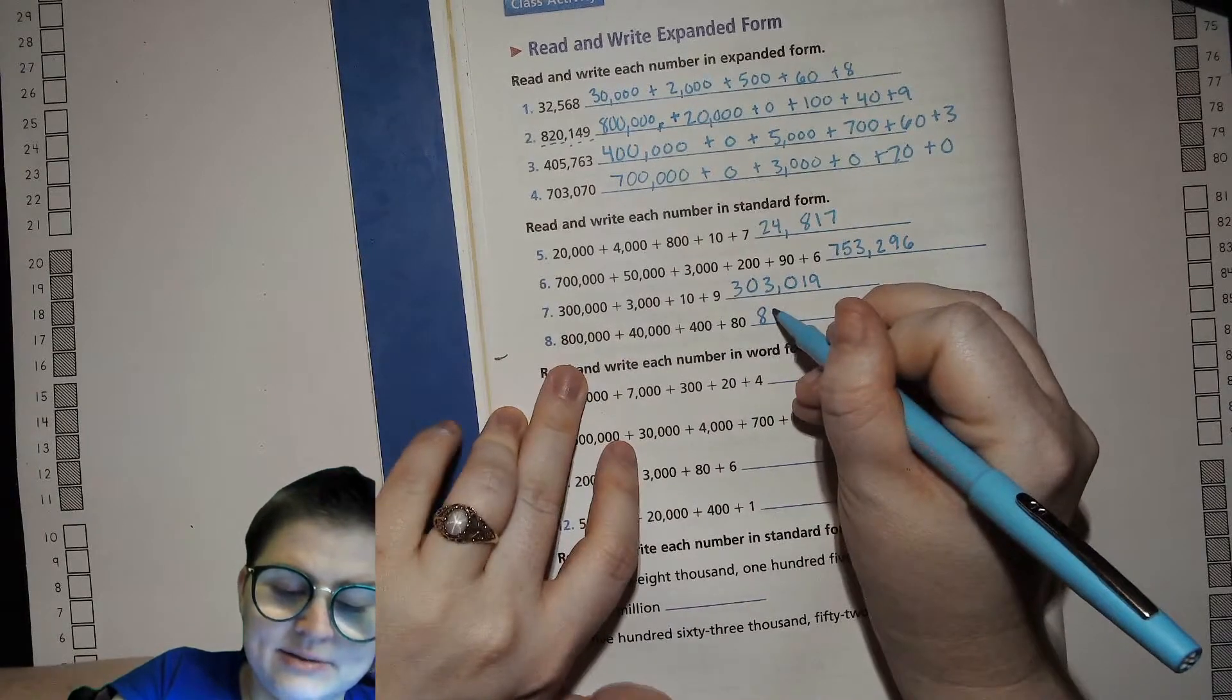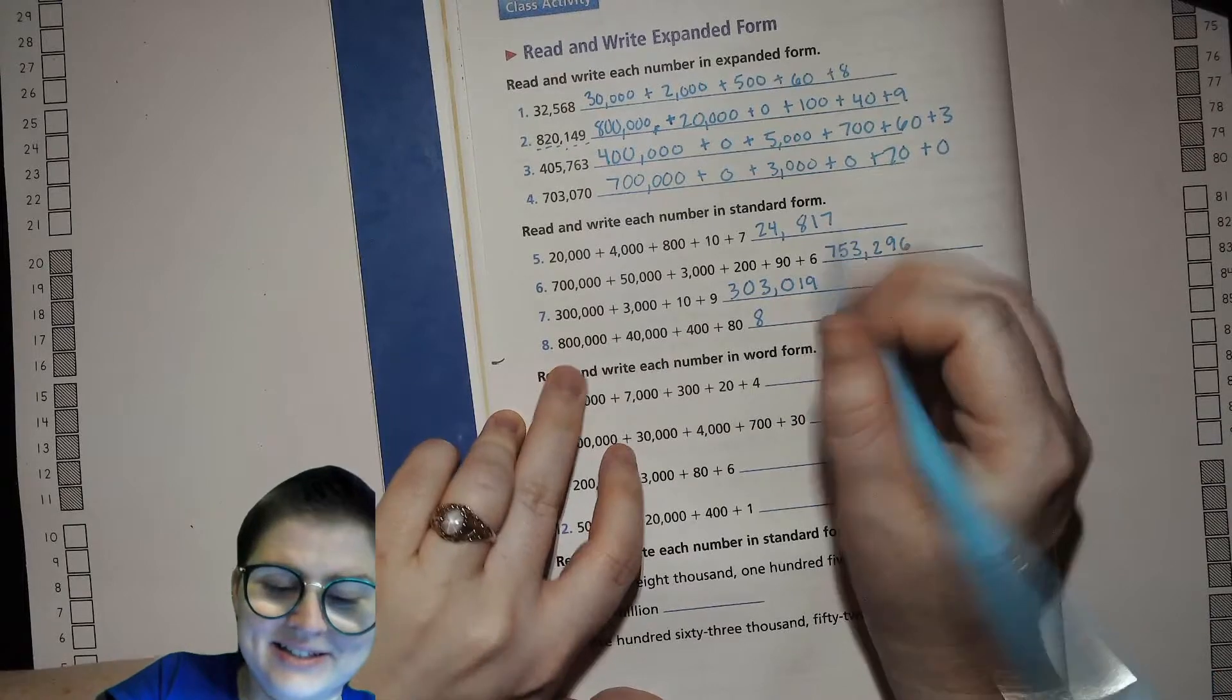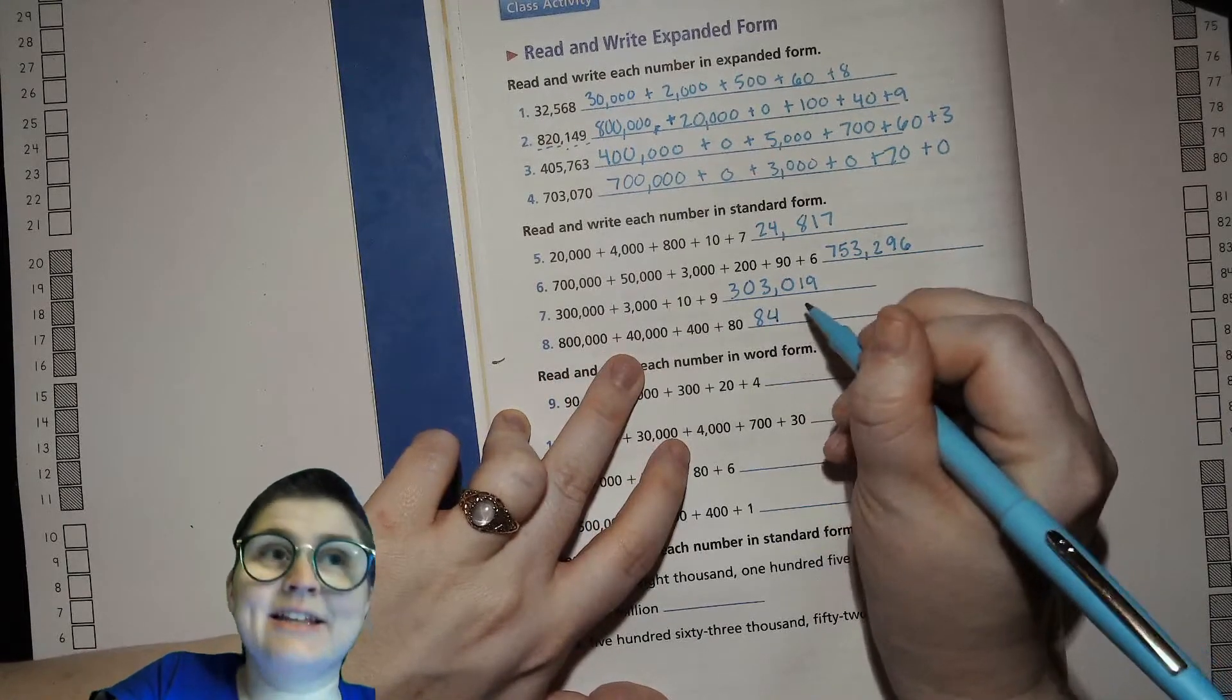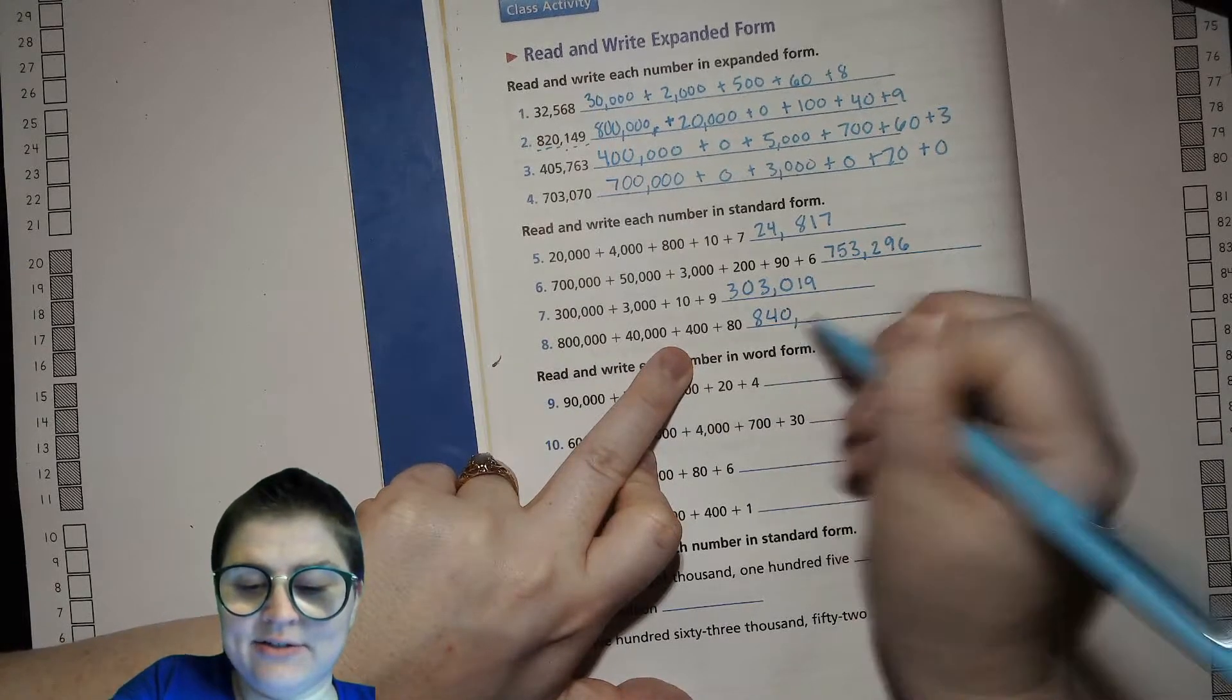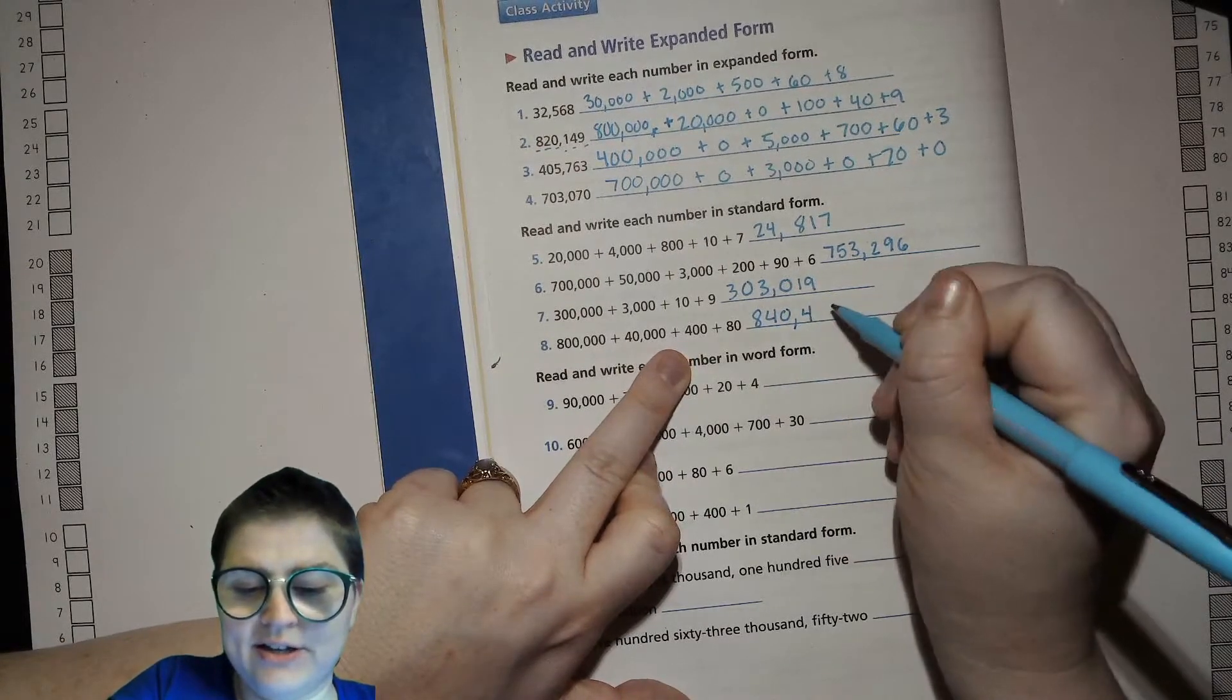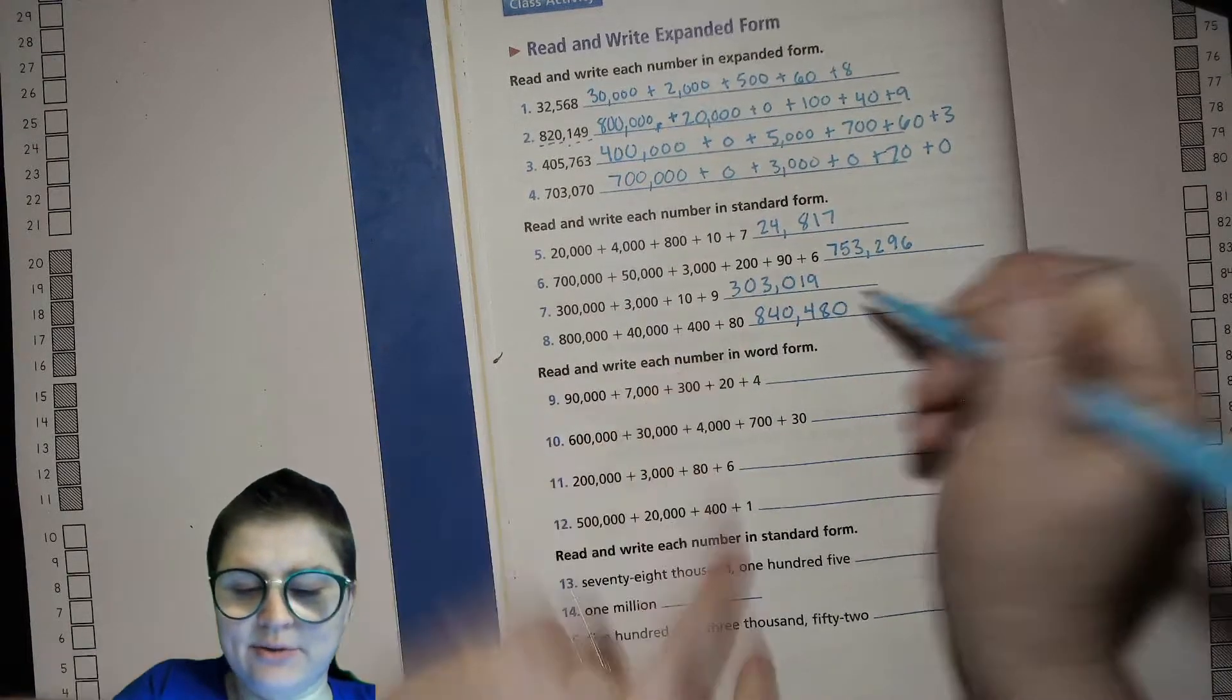8 in the hundred thousands place, 4 in the ten thousands place, zero in the thousands place, 4 in the hundreds place, 8 in the tens place, and zero in the ones place.